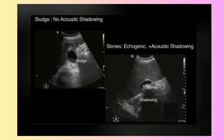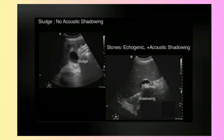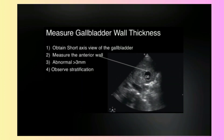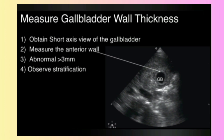First image: sludge — no acoustic shadowing. Second: stone — echogenic plus acoustic shadowing. Measure the gallbladder wall thickness.